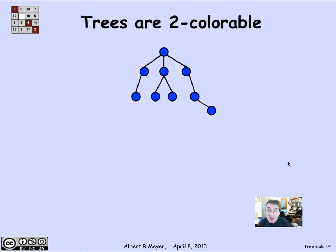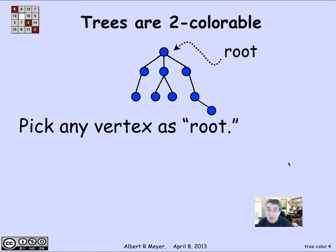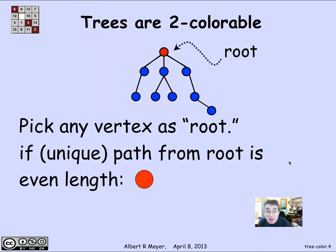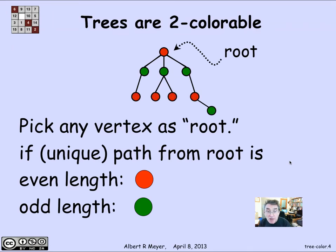The proof is just to show you how to color it. You clearly can't get by with one color if you've got any two adjacent vertices. The two-colorable way is that you choose an arbitrary vertex and call it the root. There is a unique path from the root to every vertex, using this unique path characterization. We color vertices by whether the path from the root is of odd or even length. If it's of even length, color it red; if it's of odd length, color it green. So we wind up alternating red and green.